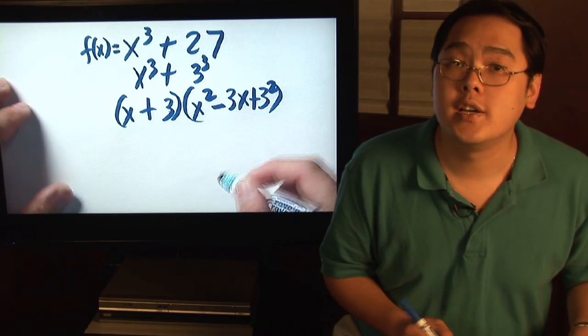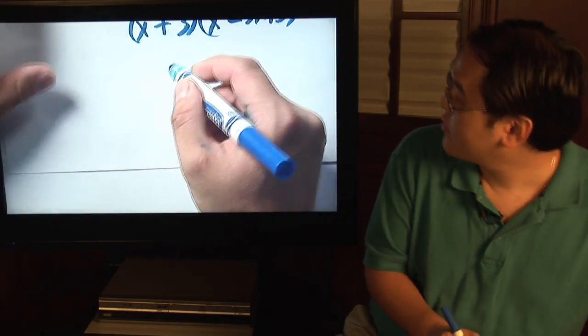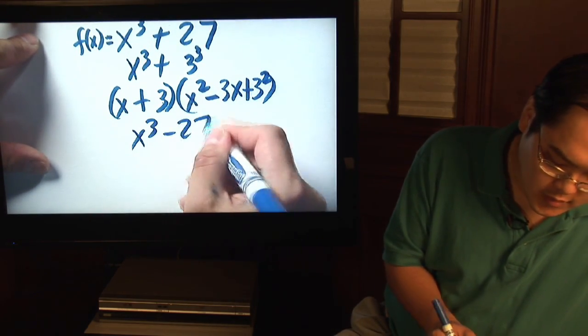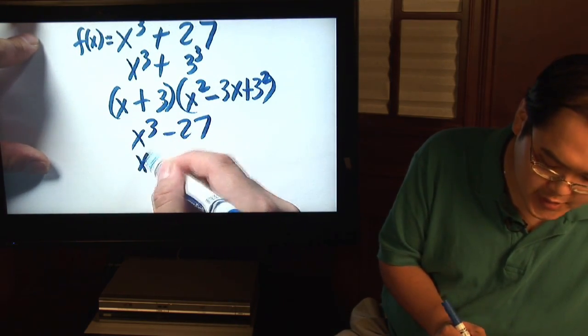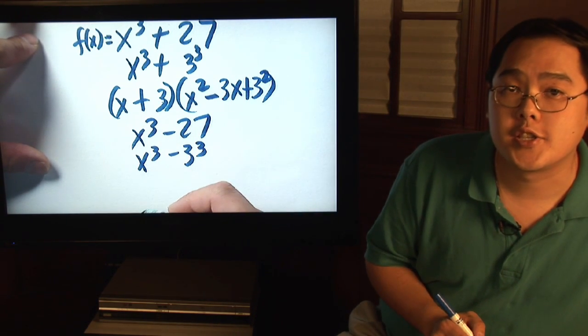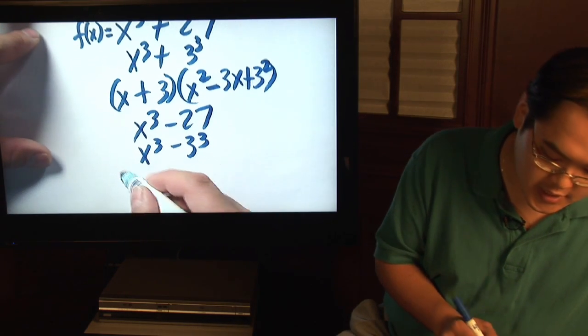Now what if we want to factor x cubed minus 27? Here we go very quickly. You already know it's 3 cubed, so it will be x cubed minus 3 cubed. Now, just like the sum of two cubes, you also have two positives and one negative sign. So here we go.